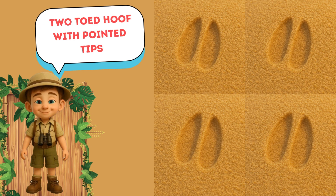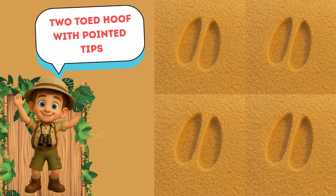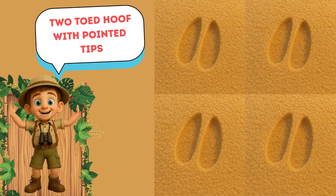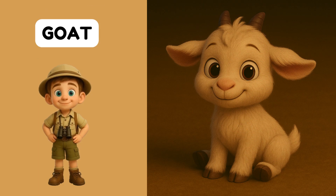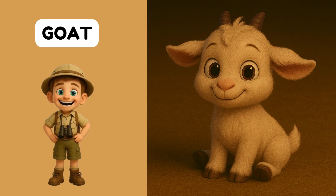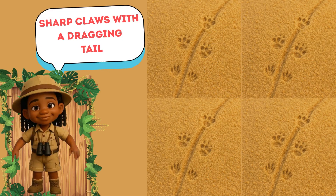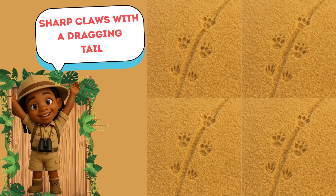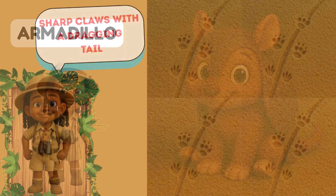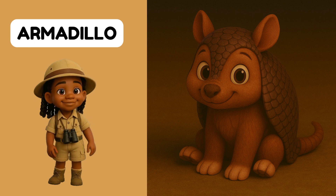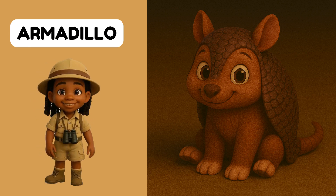Whose footprints are those? Two-toed hoof with pointed tips — that's a goat track. Whose footprints are those? Sharp claws with a dragging tail — that's an armadillo track.